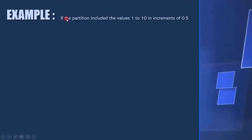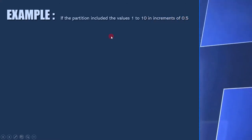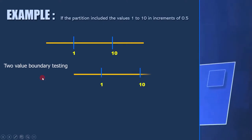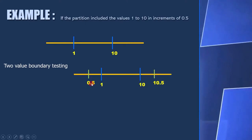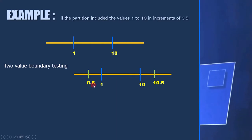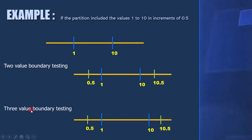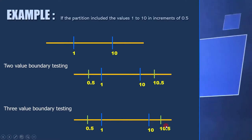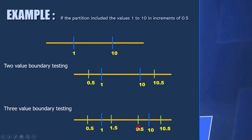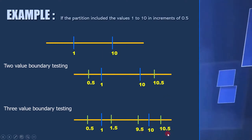Let's see one more example. Suppose the requirement is a field accepts values from 1 to 10 in increments of 0.5. For two-value boundary testing, since the increment is 0.5, we take 0.5 outside the lower boundary and 10.5 outside the upper boundary. For three-value boundary testing, the outside values are 0.5 and 10.5, while the inside values are 1.5 and 9.5.